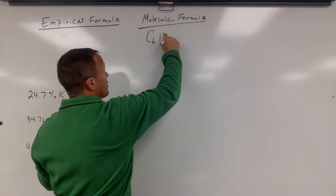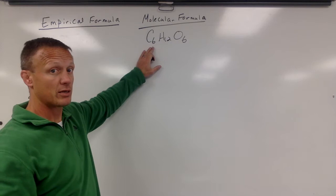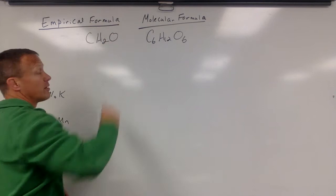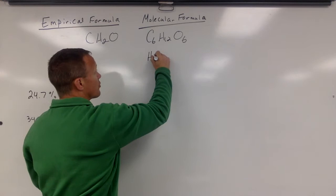So for example, glucose has that molecular formula C6H12O6. That is the real formula of glucose. There are six carbons, 12 hydrogens, six oxygens. The empirical formula of glucose would be its most reduced one, so these are in a 1:2:1 ratio - CH2O. So there might be a whole group of compounds that have this ratio, but each one has a different molecular formula.